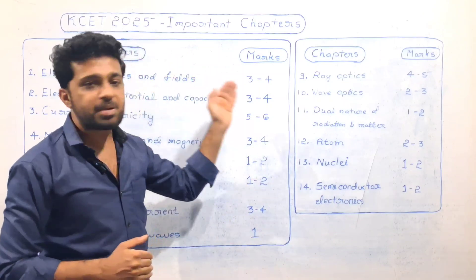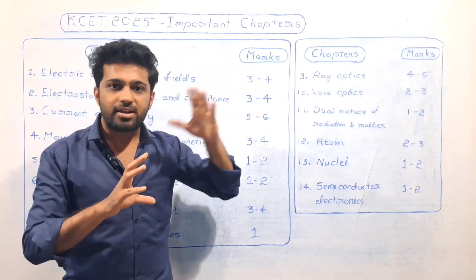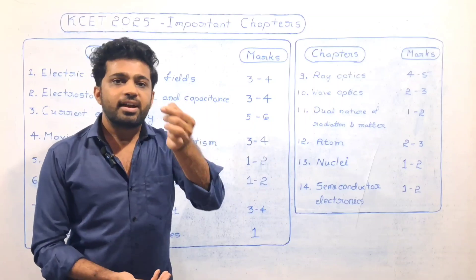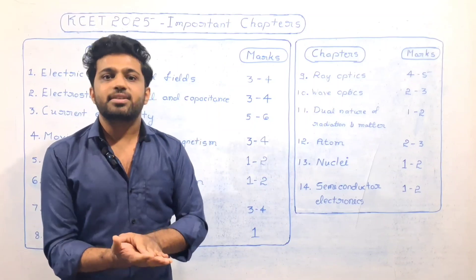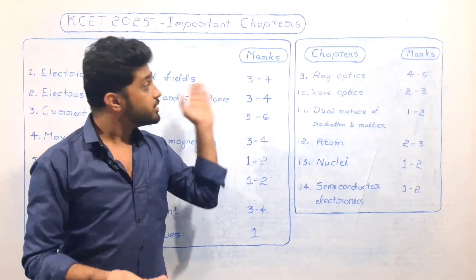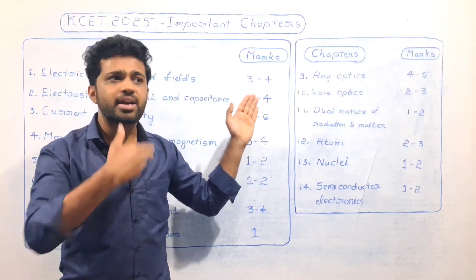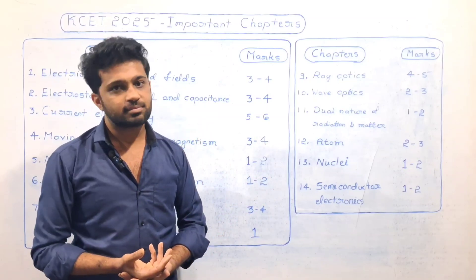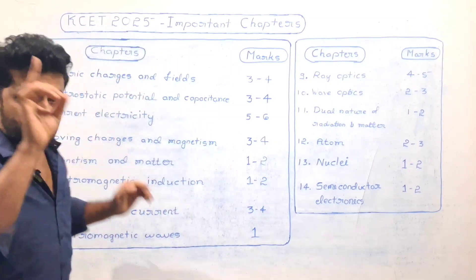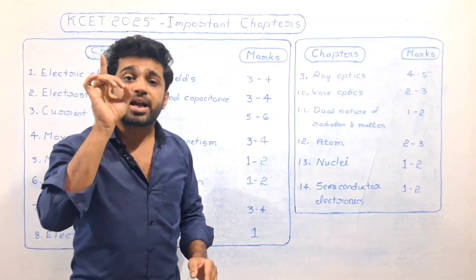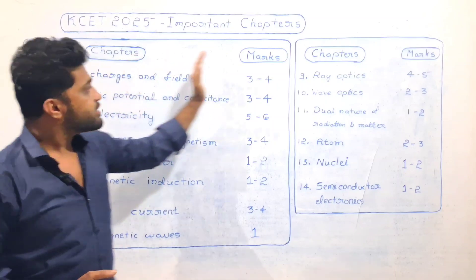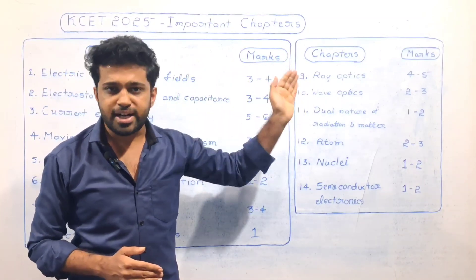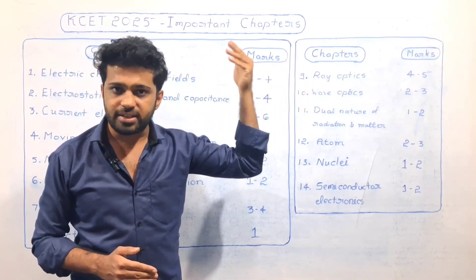So let's prepare. The concept is already clear. This chapter is related to KCET MCQs — multiple choice questions. We will solve the UC board exam questions. This is a strong start. In this chapter, Electric Charges and Fields, there are 3 to 4 marks guaranteed, 100%, in the KCET exam.